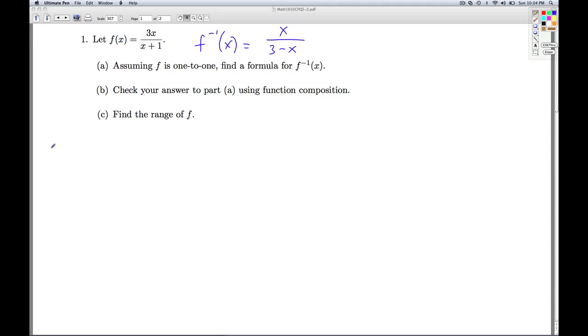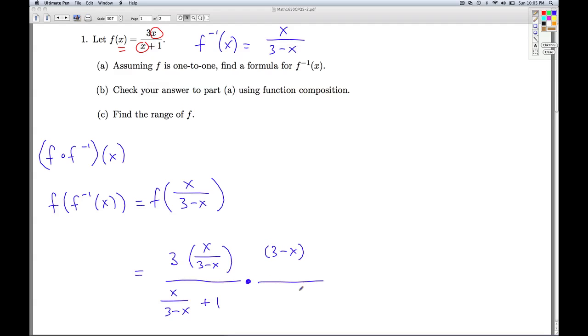So, in order to be considered an inverse function, we also have to check that f undoes the inverse. So, I need to look at f of f inverse of x. So, this would be f of what? Well, I look at my formula for f inverse. And everywhere I see an x in the formula for f of x, I've got to replace that x with that fraction. So, this is 3 times x divided by 3 minus x divided by x divided by 3 minus x plus 1. And once again, I've got a complex fraction. So, to simplify it, I'm going to multiply the numerator and denominator by 3 minus x.